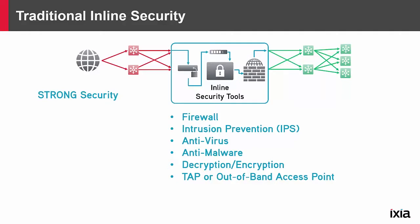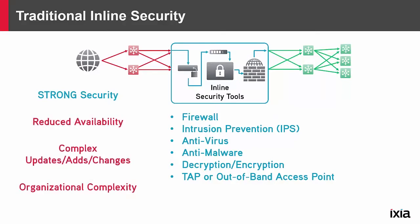While the security in these architectures is very strong, there are some challenges with them as well. They bring reduced availability in that many of these devices are introducing points of failure all in line against each other. They bring complexity in updates, additions, and changes so that any change involves managing multiple teams to align on a network outage window. And that drives organizational complexity, often between a network operations team and a network security team, which are trying to maximize both availability and security.